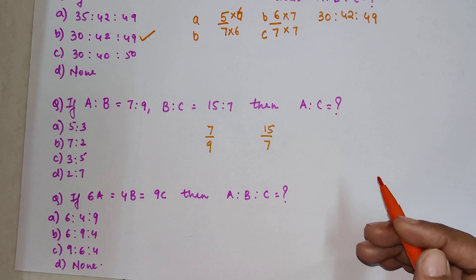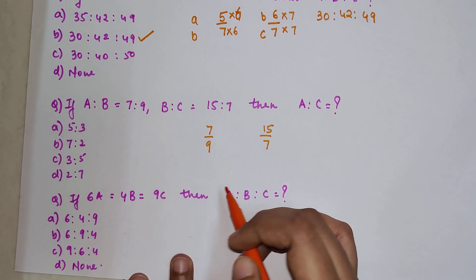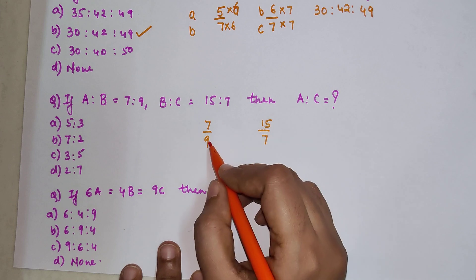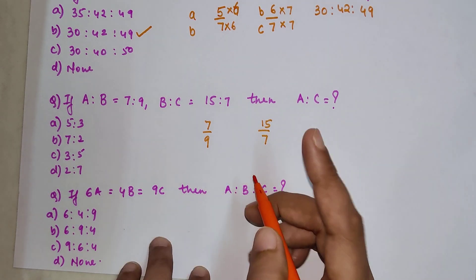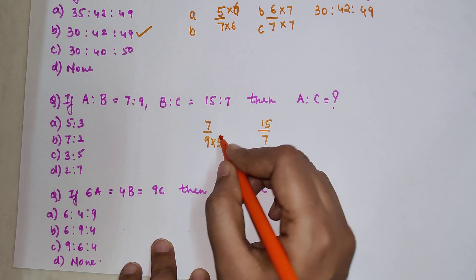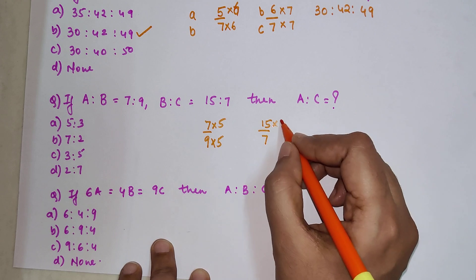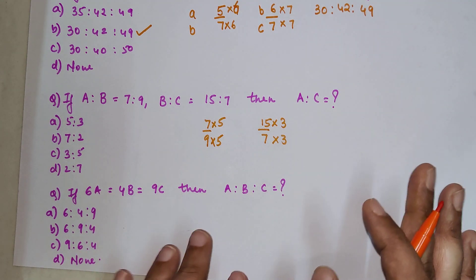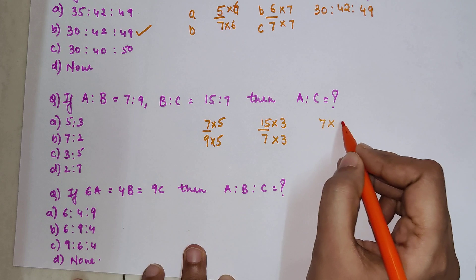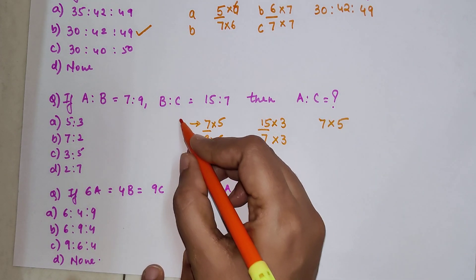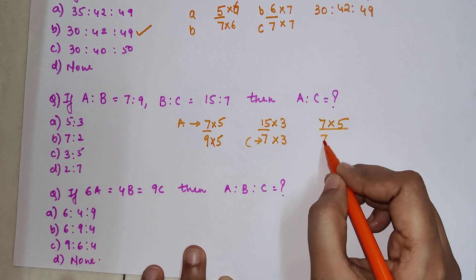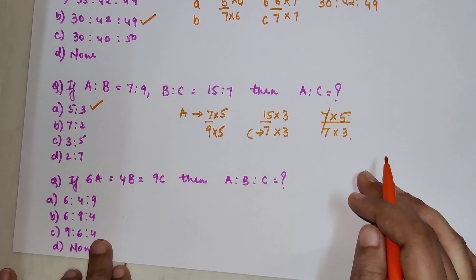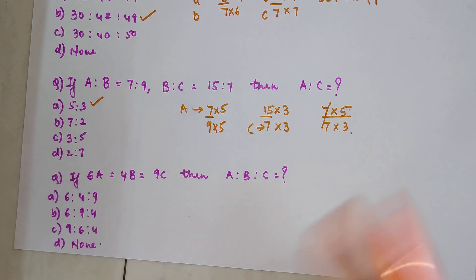To do that, we again have to make sure both B values are equal. The LCM of 9 and 15 is 45, because 3 is the common factor. So multiply the first ratio by 5 and the second ratio by 3. We do not need the B values — 7 multiplied by 5 is my A value, and the C value gives us the ratio. Cancelling down, we get 5 upon 3, so option A is the correct answer.